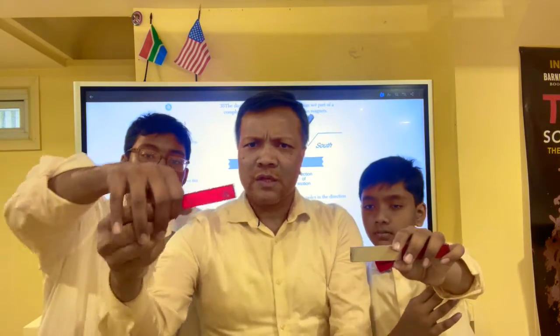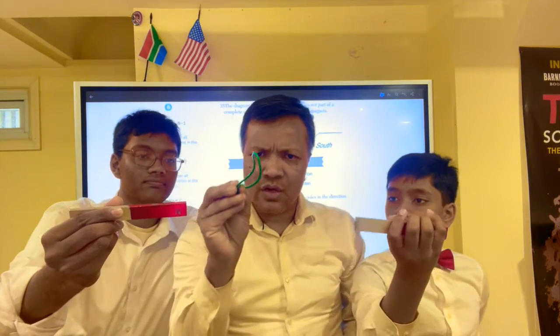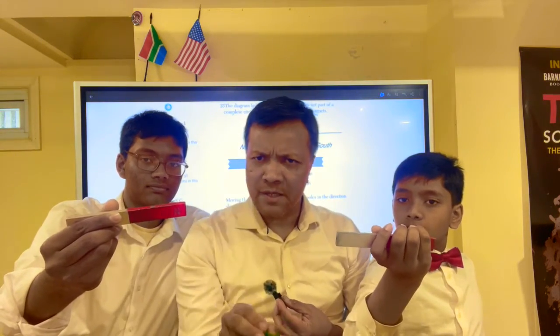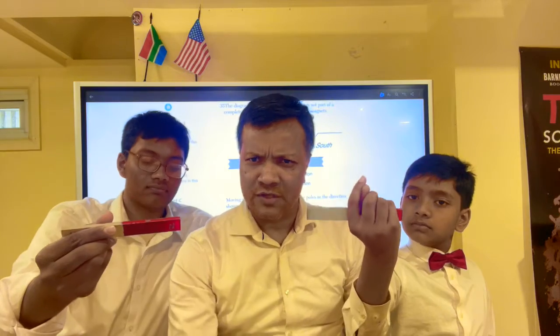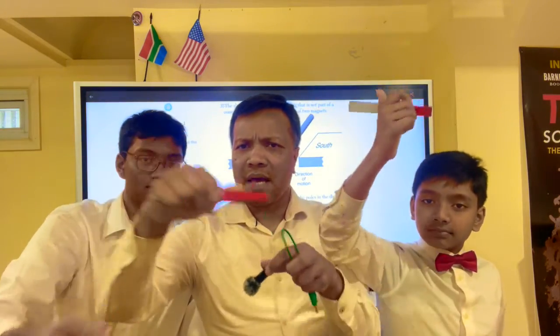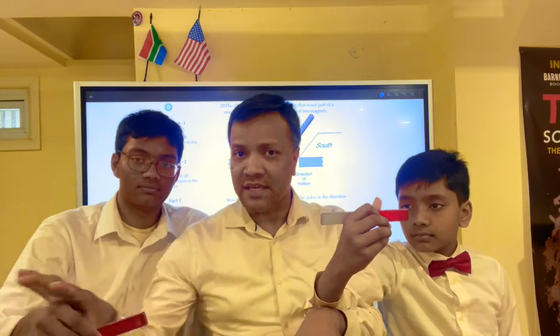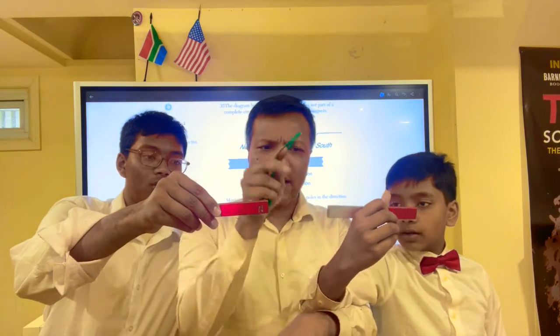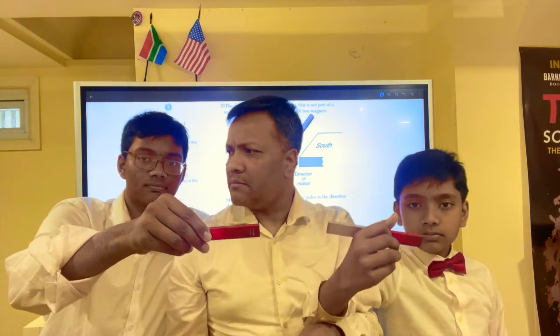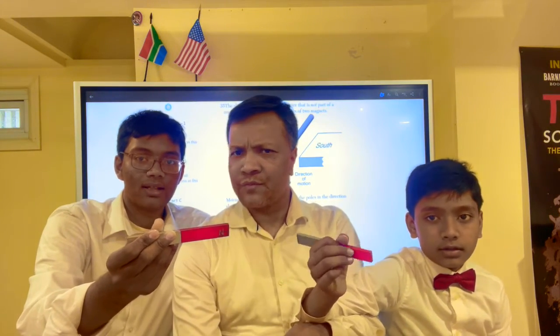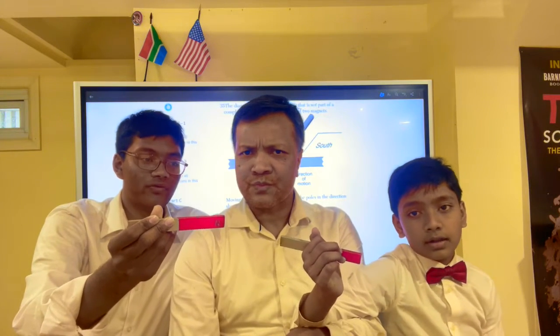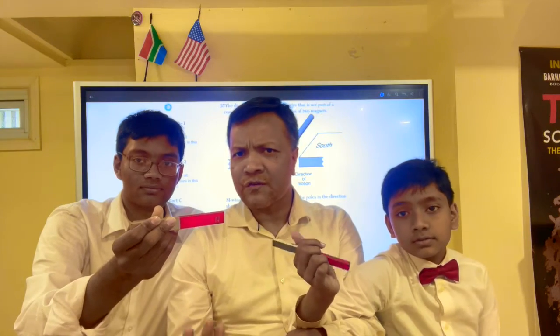Now we're going to do the other one — we're going to move this wire, which is not connected to any battery, up and down. This is the third way you can create voltage. So three ways: one is by a lemon battery or any battery; the other two are Faraday's way — move the magnet in and out of the loop — or move the wire up and down in a magnetic field.